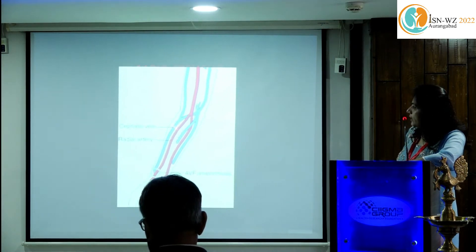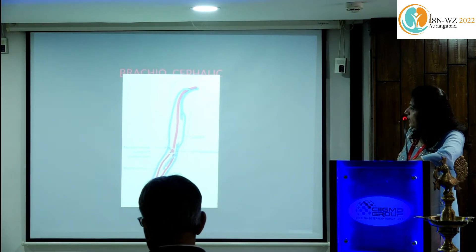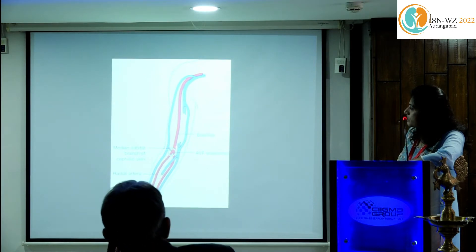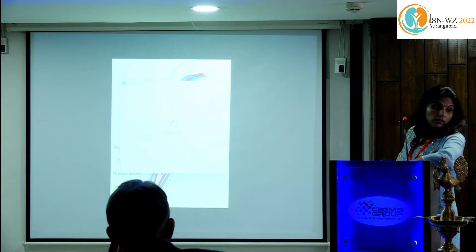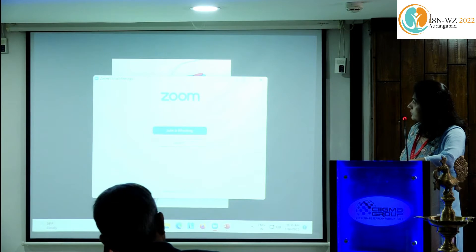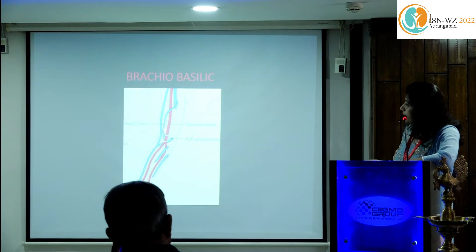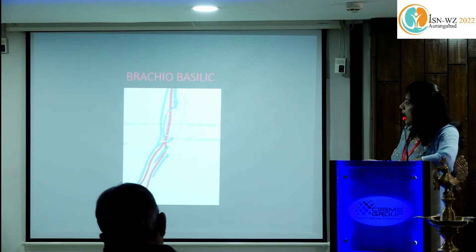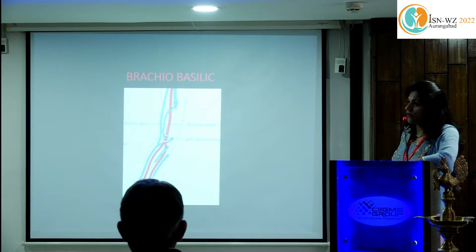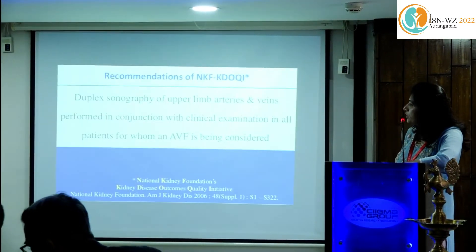A radiocephalic fistula at the wrist involves anastomosis between the radial artery and the cephalic vein at the wrist. A brachiocephalic fistula is where the median cubital branch of the cephalic vein is anastomosed with the brachial artery. In a brachio-basilic fistula, the basilic vein is anastomosed with the brachial artery at the elbow, then superficialized for cannulation once the fistula matures.